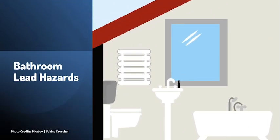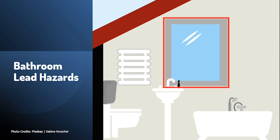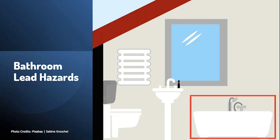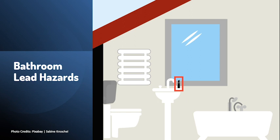Bathroom lead hazards. There is an image of a bathroom with a toilet, bathtub, a window, and a sink with a small bottle of cosmetic product — the window, bathtub, and cosmetic product are highlighted as potential lead hazards. Windows can be a major source of lead exposure for children because they can create lead dust or cause lead paint to chip. Lead paint is a big concern in homes built before 1978. If lead pipes are used in a home, any source of water can expose a person to lead. Letting water run for three to five minutes can help flush out pipes. Some cosmetics imported from other countries can also be a source of lead exposure.